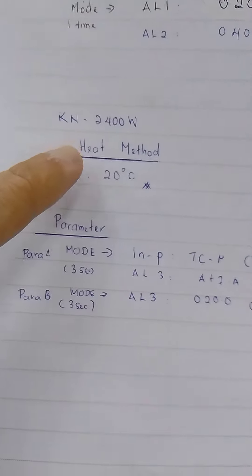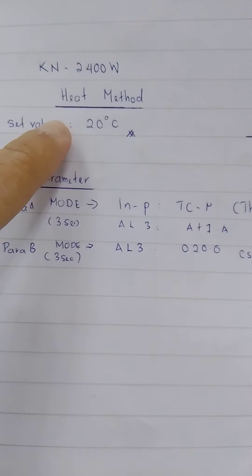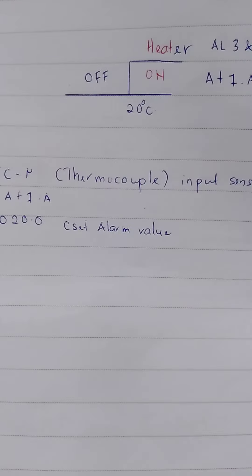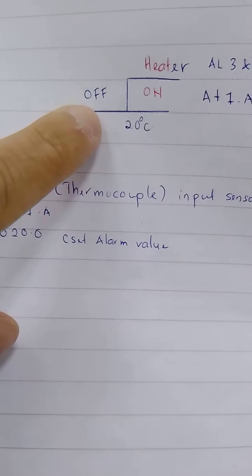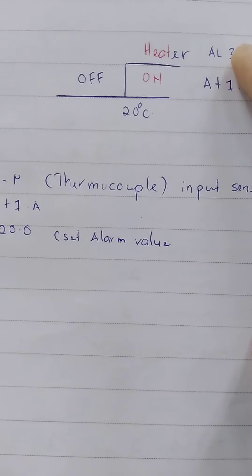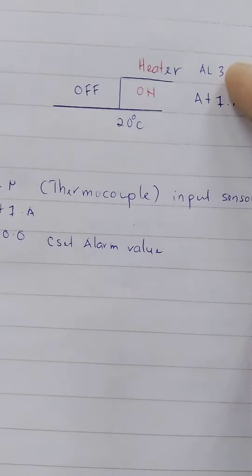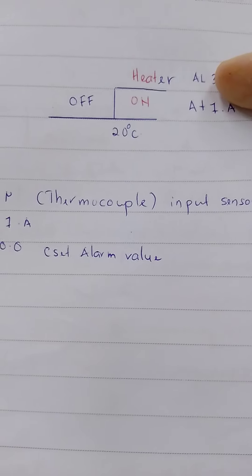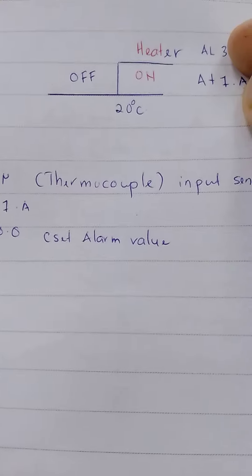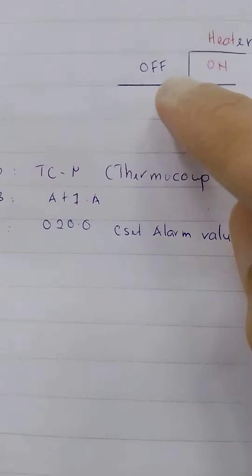KN-2004W. This is one method for the heater. I mean your alarm, alarm number 3. Alarm number 3 using AT1.A.